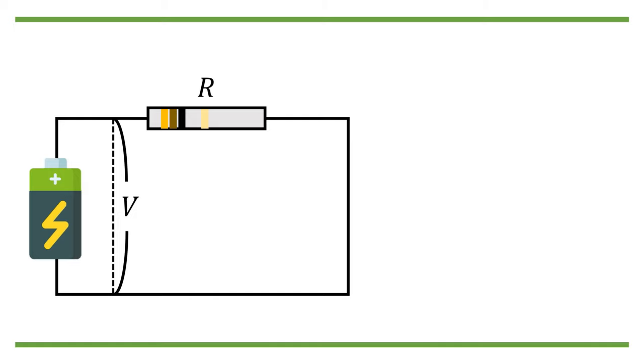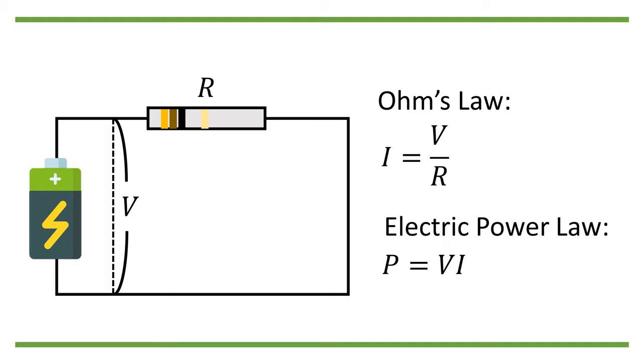Now, as any middle school physics textbook will tell you, the current flowing around the line obeys Ohm's law, which is I equals V divided by R. And the power supplied from the battery to the load obeys the electric power law, P equals V multiplied by I.